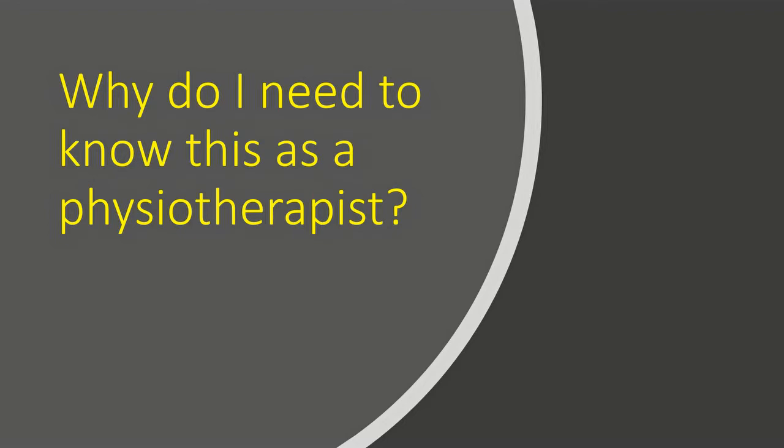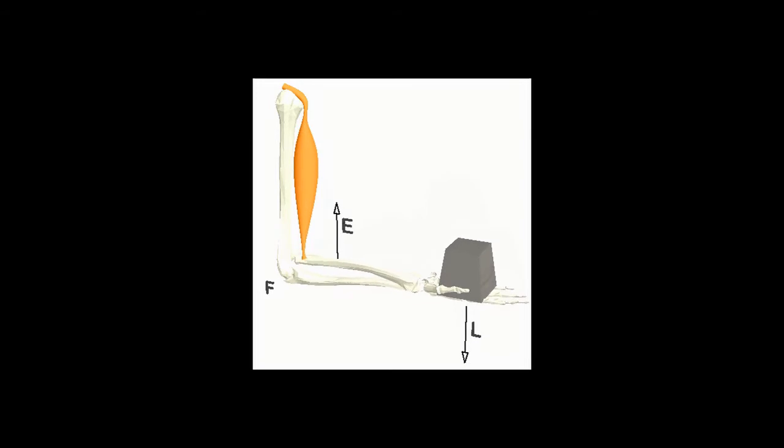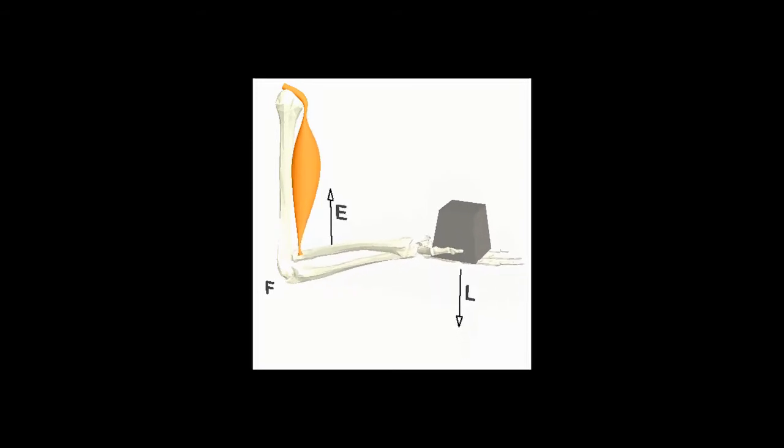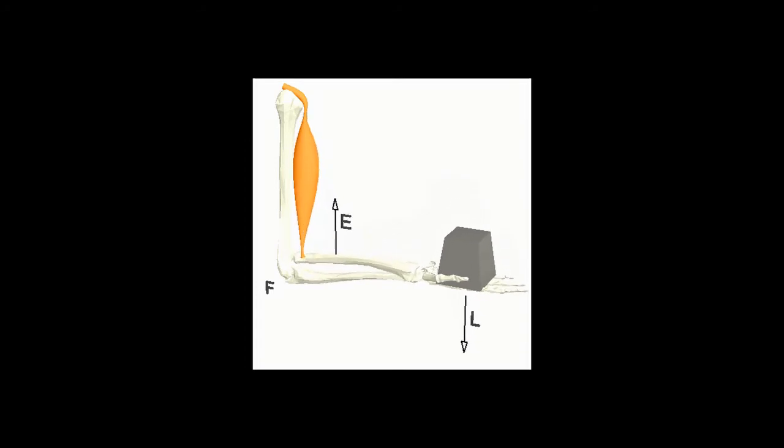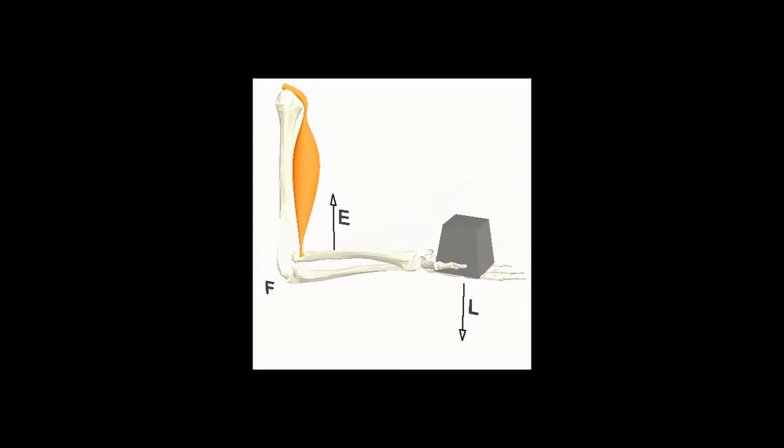Why do we need to know this as physiotherapists? Well, for this example of lifting a weight, I need to know that the fulcrum is my elbow joint, so the elbow joint is taking a lot of the rotatory strain. The effort's being produced by the biceps and the load is being produced by the weight.